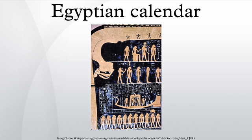For much of Egyptian history, the months were not referred to by individual names, but were rather numbered within the three seasons. As early as the Middle Kingdom, however, each month had its own name. These finally evolved into the New Kingdom months, which in turn gave rise to the Hellenized names that were used for chronology by Ptolemy in his Almagest, and by others.